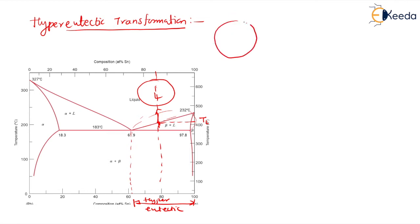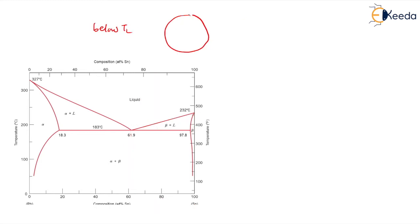Below TL, beta starts nucleating and it will grow in the form of a dendrite. From TL down to temperature T, the beta is going to grow in the form of dendrite.